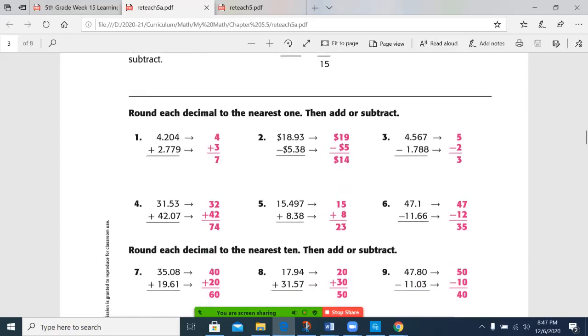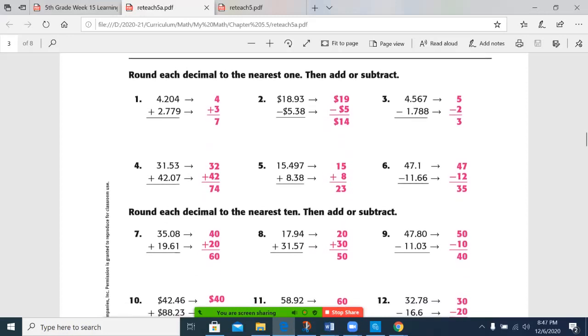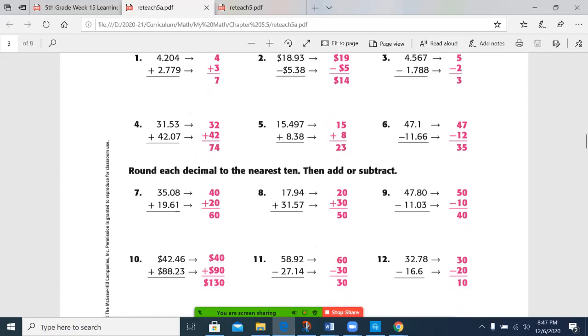So let's look at our previous session's work. In each one of these, we were rounding to the nearest whole number, and we did these two together. We have a 4, that 5 makes it go up to 5, the 7 makes that 1 go to 2, and you subtract. You got 5 minus 2 is 3. 32 and 42 for 74, 15 and 8 for 23, 47 minus 12 for 35.